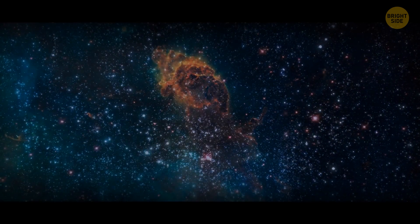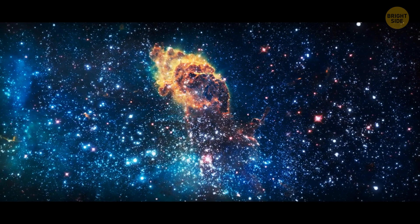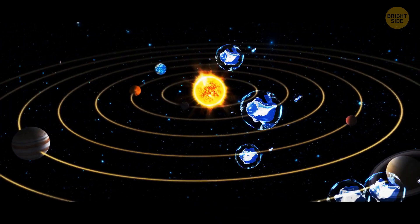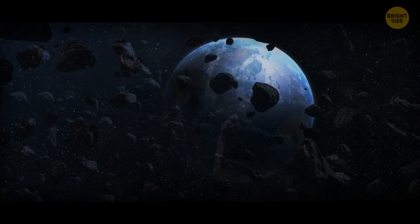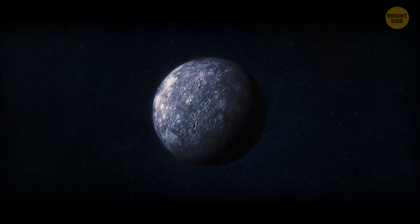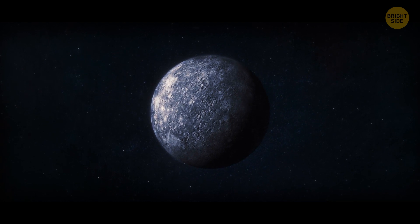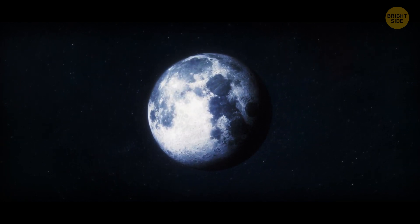We used to think that water was really rare in space, but now we know there's water ice across our entire solar system. For starters, you can usually find water on asteroids and comets. It's also in craters on Mercury and the Moon that are in permanent shadows.